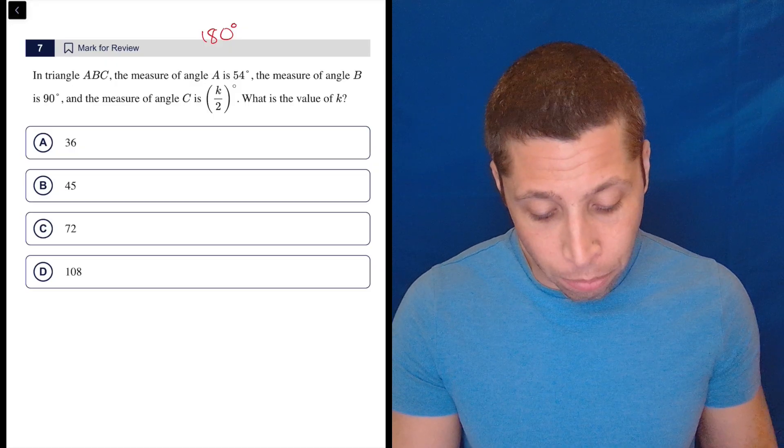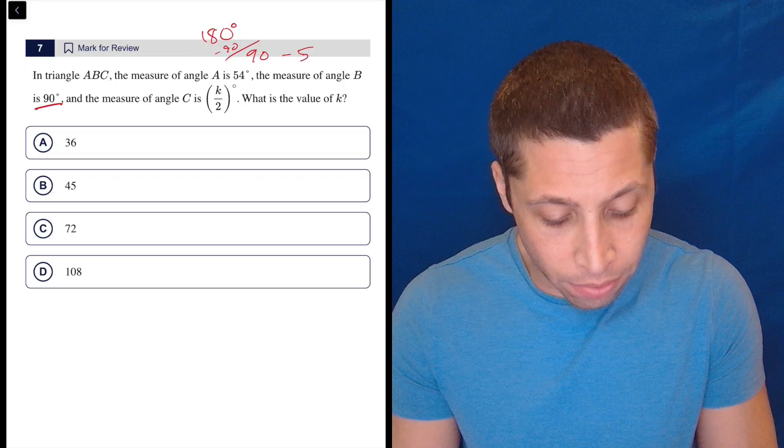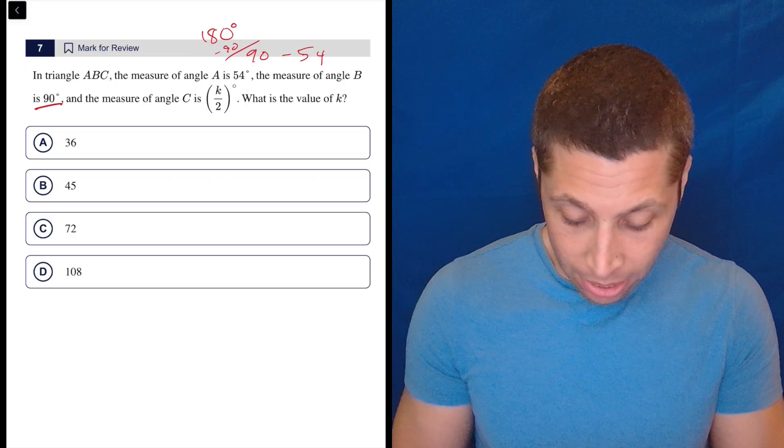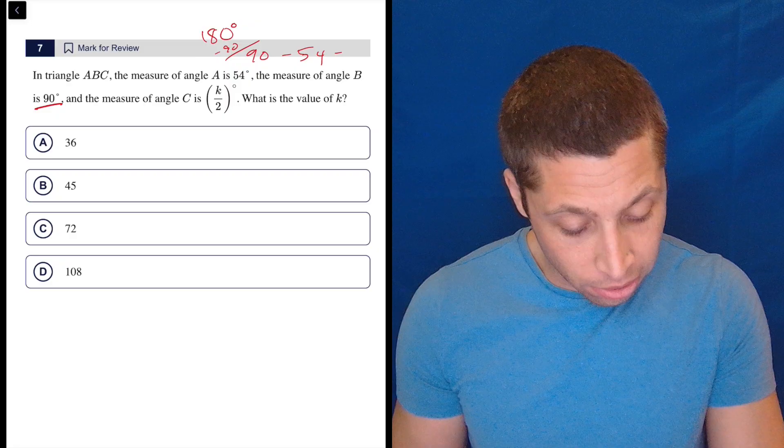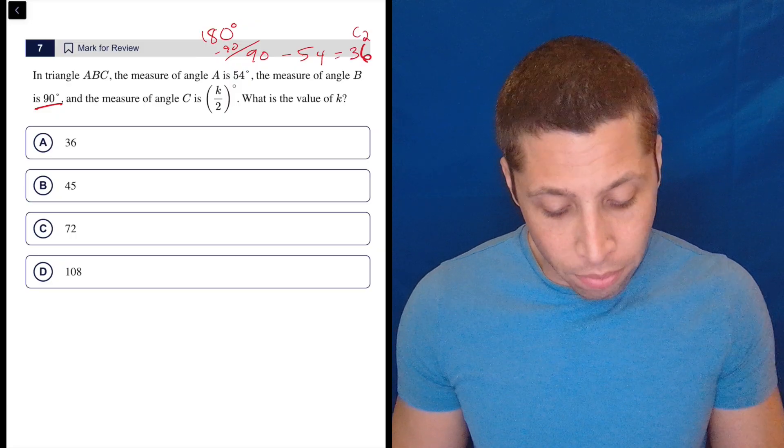let's just take out the angles that we don't want. So let's get rid of this 90. That leaves us with 90 left, and let's get rid of that 54. That one I'm going to go to the calculator for because I'm just a little nervous always of a careless mistake. So that leaves 36, and that is the value of angle C.